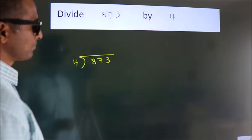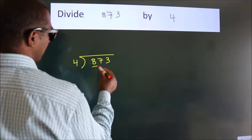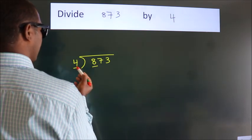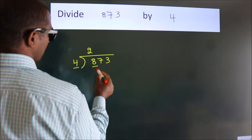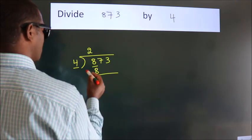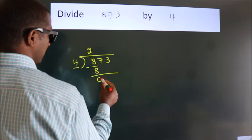Next, here we have 8, here 4. When do we get 8? In 4 table. 4 2s, 8. Now, we should subtract. We get 0.